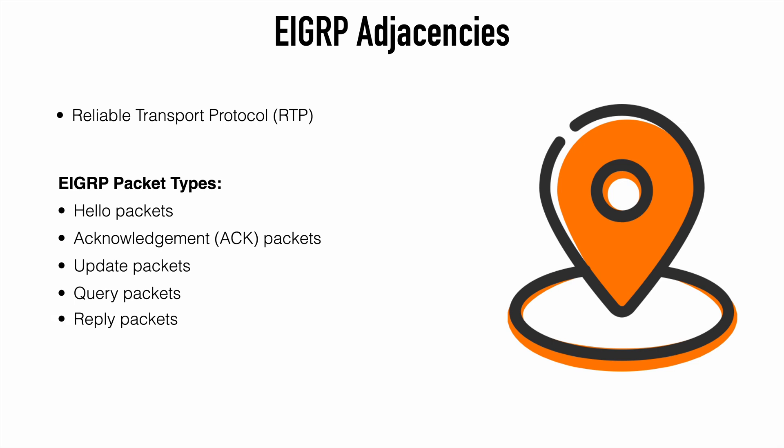We also have stuck-in-active state packets, or SIA packets — specifically SIA query and SIA reply packets. Both are unicast packets and require acknowledgement. The SIA query packet is used to ask a neighbor if it is still working on the original query that was sent. If the neighbor is reachable and still working on that query, it responds with an SIA reply packet. That resets the timers and ensures the neighbor relationship doesn't get terminated prematurely before the query can be responded to.